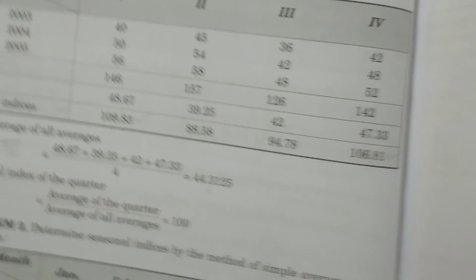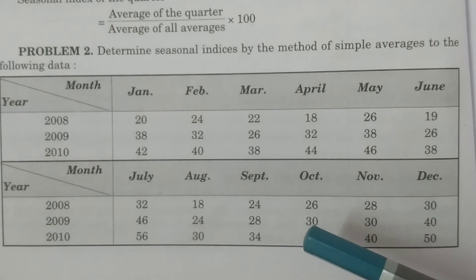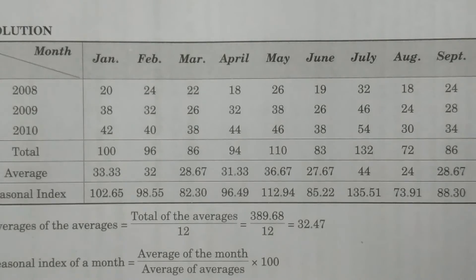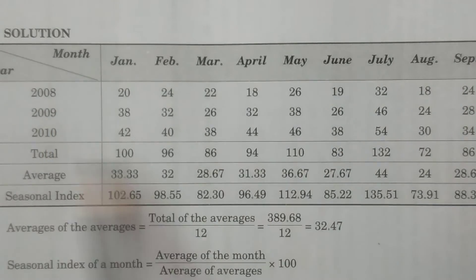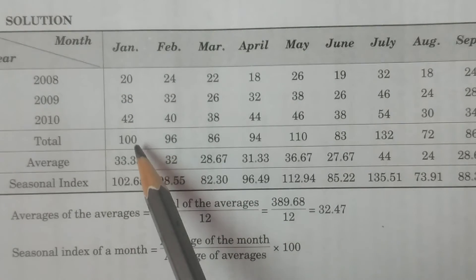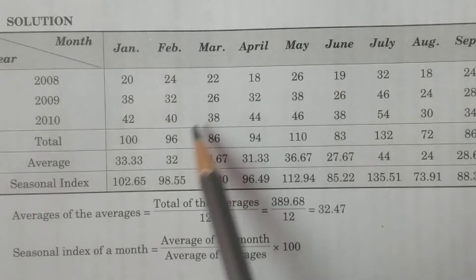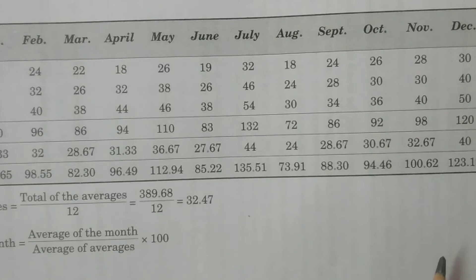That was quarterly data. Now I briefly show the monthly data problem. For three years of monthly data, we arrange the data year-wise and month-wise for 2008, 2009, 2010. We calculate the average for every month — for January, total across all years divided by 3; for example, total 100 / 3 = 33.3.